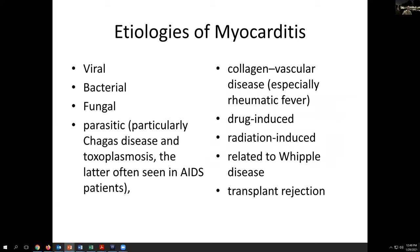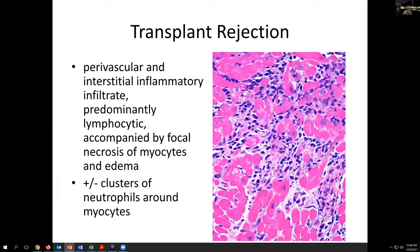In terms of etiologies of myocarditis, in addition to drug or radiation-induced ones, we can have viral or other infectious causes, including parasitic myocarditis such as toxo seen in the AIDS population. There are also autoimmune disorders like rheumatic fever, Whipple's — a combination bacterial and inflammatory process — and more frequently now transplant rejection in patients who have undergone cardiac transplantation.